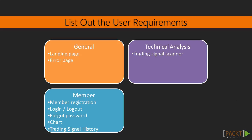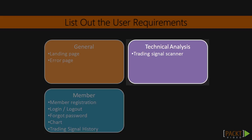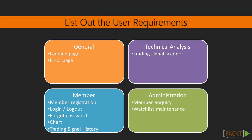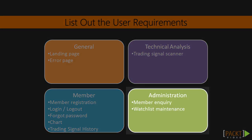The third category is technical analysis. There's only one, but a very important core function: the trading signal scanner. The last category is the admin functions, which includes maintenance of the watch list and inquiry of members.